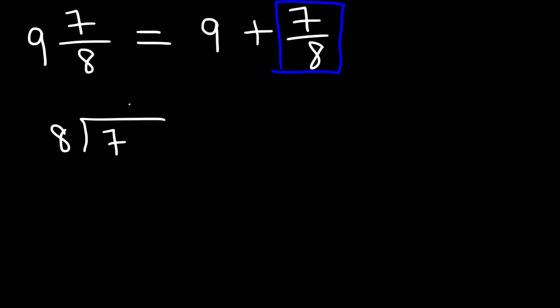So 8 goes into 7 zero times. Now how many times does 8 go into 70? 8 times 8 is 64. 8 times 9 is 72. And 72 exceeds 70. So we could say 8 goes into 70 eight times. 8 times 8 is 64. So 8 times 0.8 is 6.4. 7 minus 6.4 is 0.6. And so let's bring down a 0.